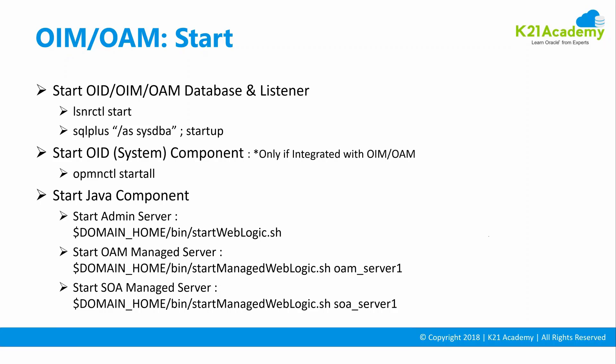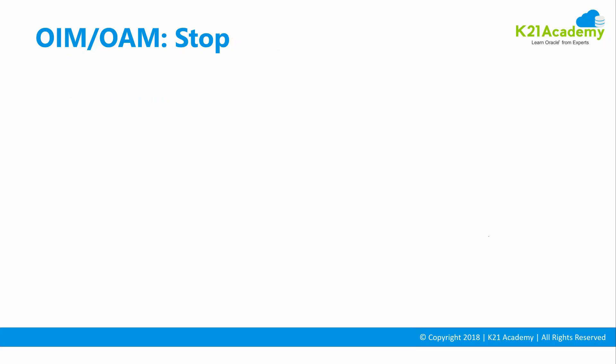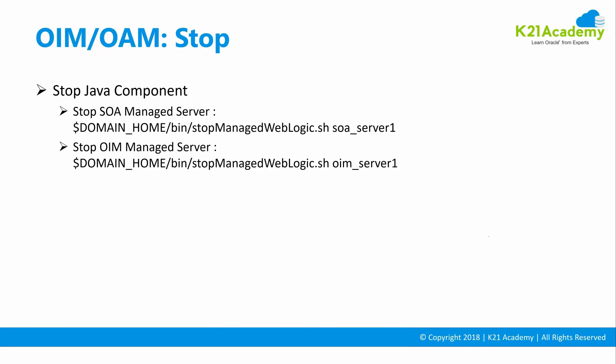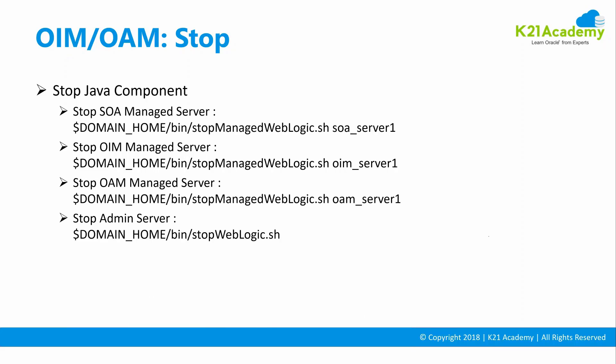First start the admin server, then start the managed servers for Oracle Access Manager or SOA Suite. Then start Oracle Identity Manager. Stop is the reverse: first stop the managed servers of Oracle Identity Manager, SOA Suite, and Access Manager, and then stop the admin server.